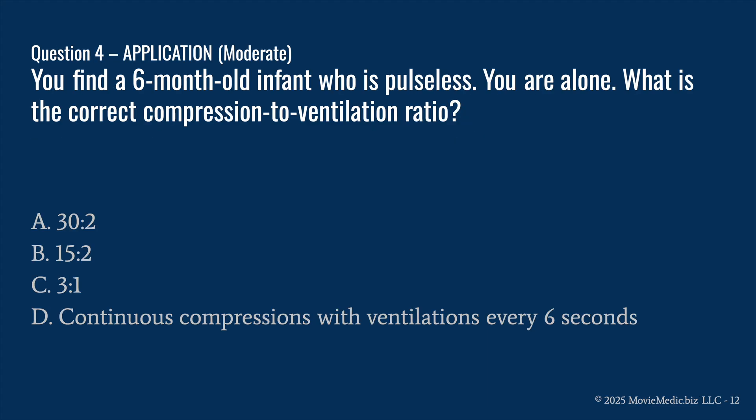Question four. You find a six-month-old infant who is pulseless. You are alone. What is the correct compression to ventilation ratio? A: 30 to 2. B: 15 to 2. C: 3 to 1. Or D: Continuous compressions with ventilations every six seconds. The answer is A, 30 to 2.